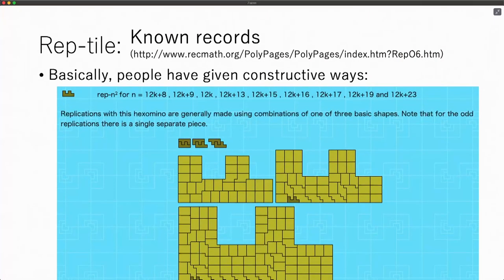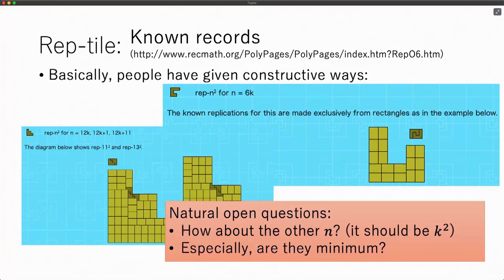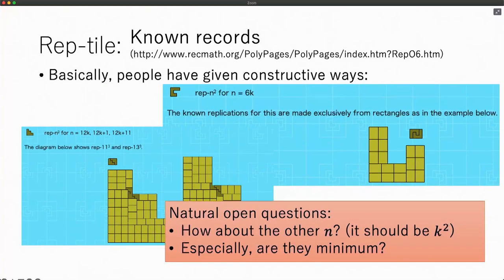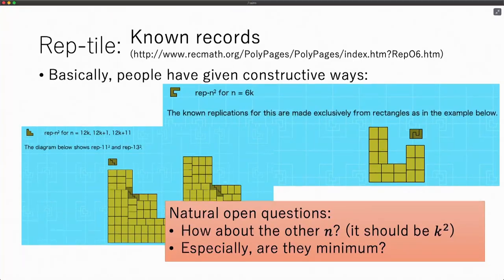You can find the known reports about reptiles like this one, and this one, and like this one. But basically, people seek to find these patterns in constructive ways. We think there is a very natural problem: How about the other end? Can we generalize it to some smaller number n, or especially is it the minimum or not? We may find better or fewer pieces patterns.